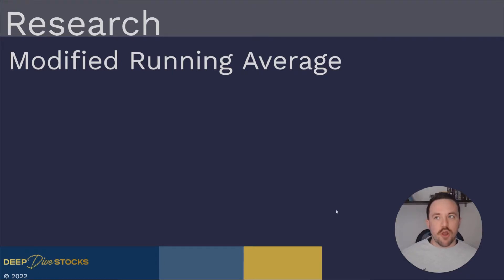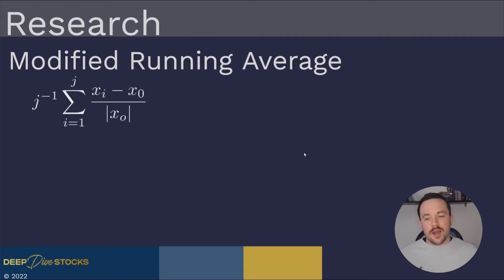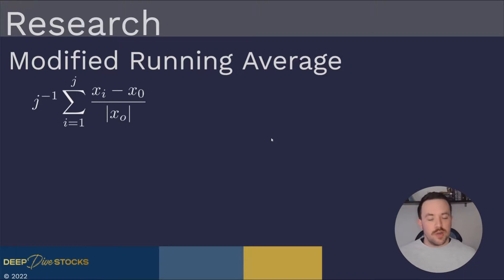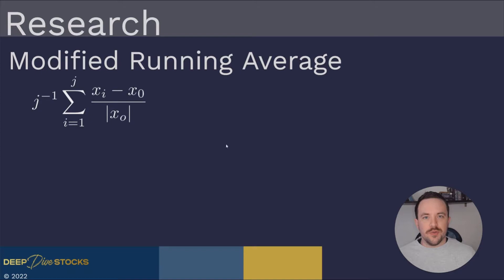The Snap Graphs are optimized for the direction of price movement, and one way that was achieved is by using a modified running average. Most running averages calculate the change from day one to day two, then day two to day three, and average those. The Snap Graph approach instead goes from day one to day two, day one to day three, day one to day four, and so on — averaging those values for a better view of the path of price action.